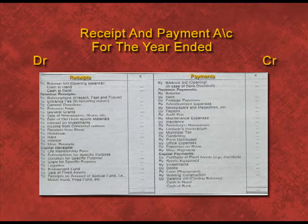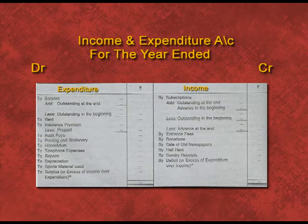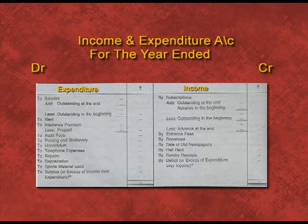Now there is the format of income and expenditure account. Under income and expenditure account, all revenue nature income will be put on the credit side and all expenditure of revenue nature will come on the debit side. If the income side is more, the result is surplus, and if the expenditure side is more, then there is a deficit.